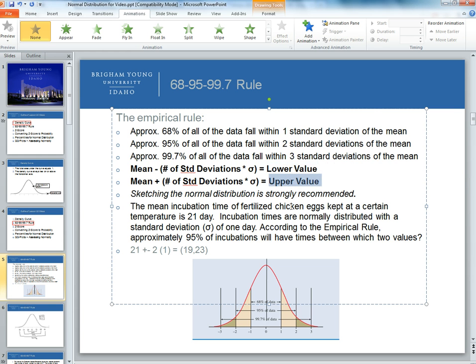For instance, what a lower value is and what an upper value is. If we have a mean of, say, 15 and a standard deviation of 2, approximately 95% of the data fall between which two numbers? We can use the mean and standard deviation to come up with an upper value and a lower value. However, I strongly recommend you all sketching the normal distribution to visualize and see what you can do with that.